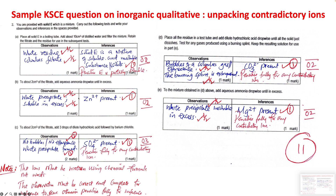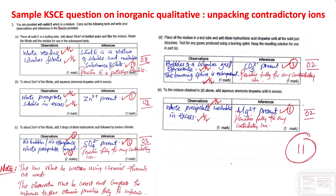The question is question number two. You are provided solid E, which is a mixture — underline the word 'mixture,' that is very important. Carry out the following tests and write your observations and inferences in the spaces provided. Place the solid in a boiling tube, add 10 cubic centimeters of distilled water, and filter the mixture. Retain the filtrate and the residue for use in subsequent tests.